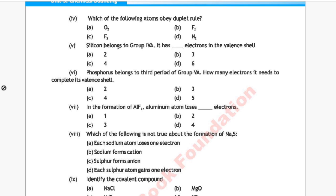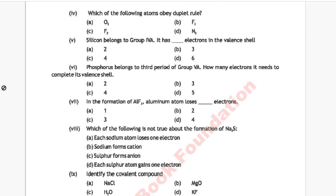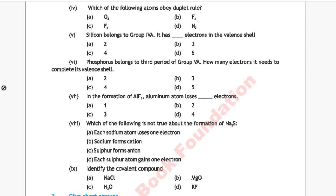Question 5: Carbon has dash electrons in the valence shell. Option A: 2, Option B: 3, Option C: 4, Option D: 6. The correct answer is Option C, 4.